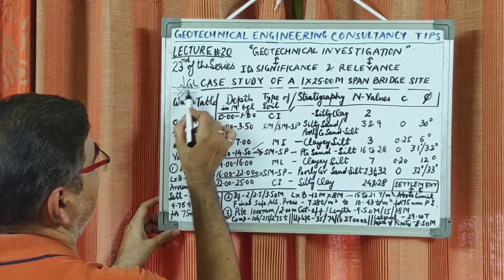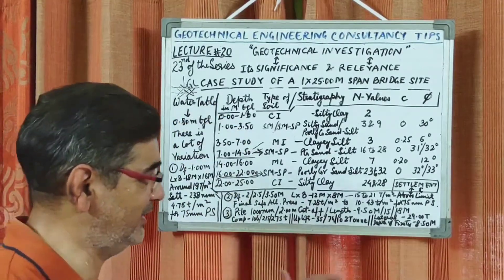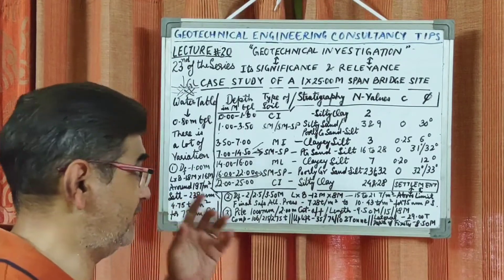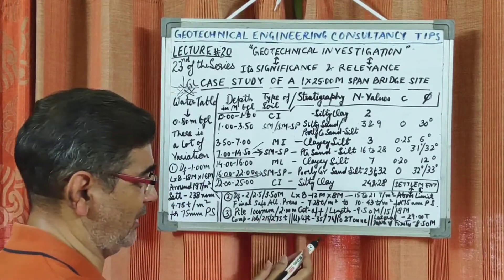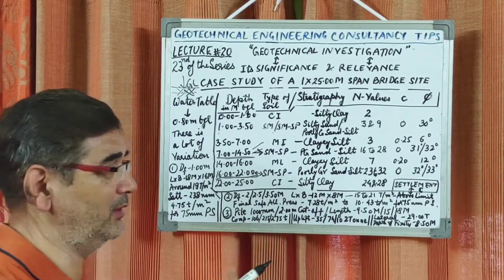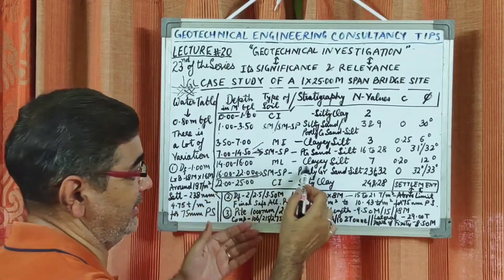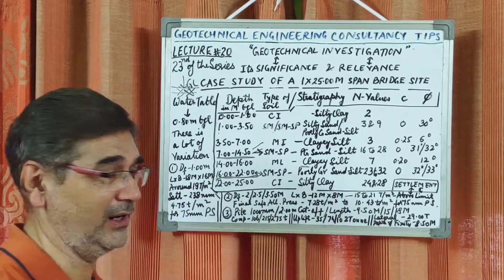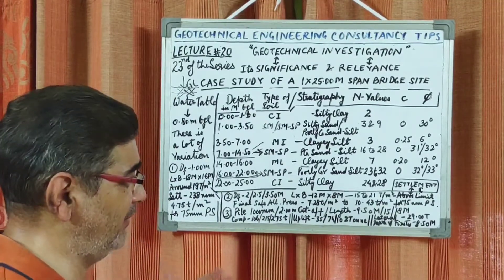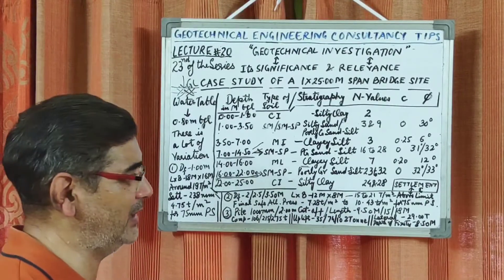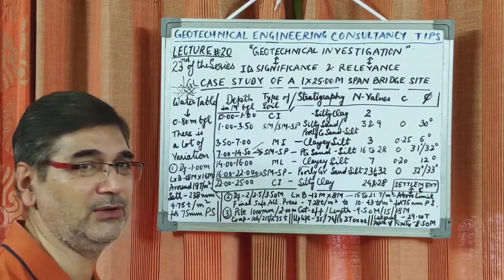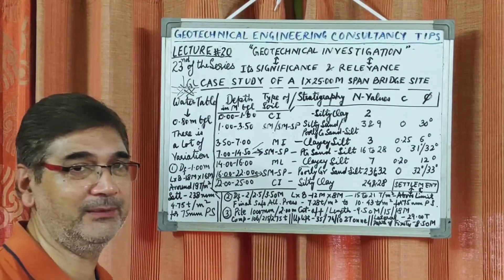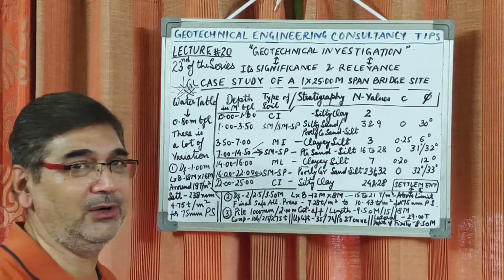It has been found and observed — which I may cover in future lectures — that whenever you rest your pile in sandy soil you are able to extract a much greater end-bearing component compared to a pile rested in clay soil. That is why we decided to rest all these piles in sandy soil, so that the structural engineer concerned can have a range of values at different depths for this 1000 mm diameter pile with 2 meter cutoff, in order to decide on the number of piles to be provided at the abutment location as a group.